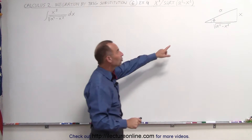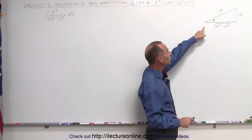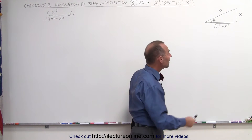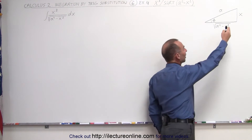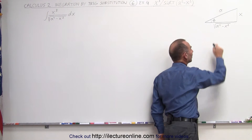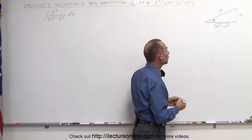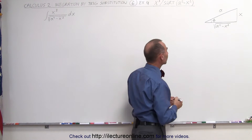Again, we use this relationship on the triangle, where the hypotenuse is a, the opposite side is x, and the adjacent side is the square root of a squared minus x squared.